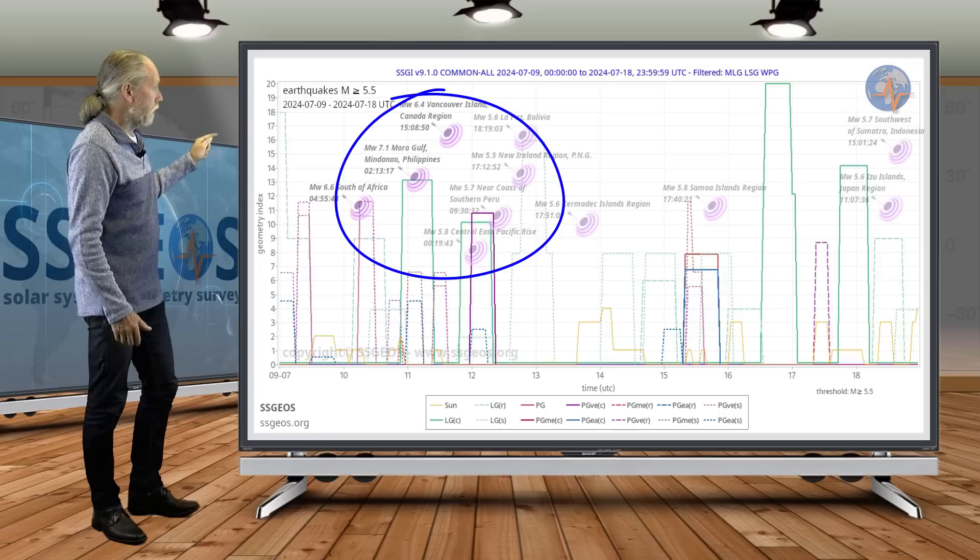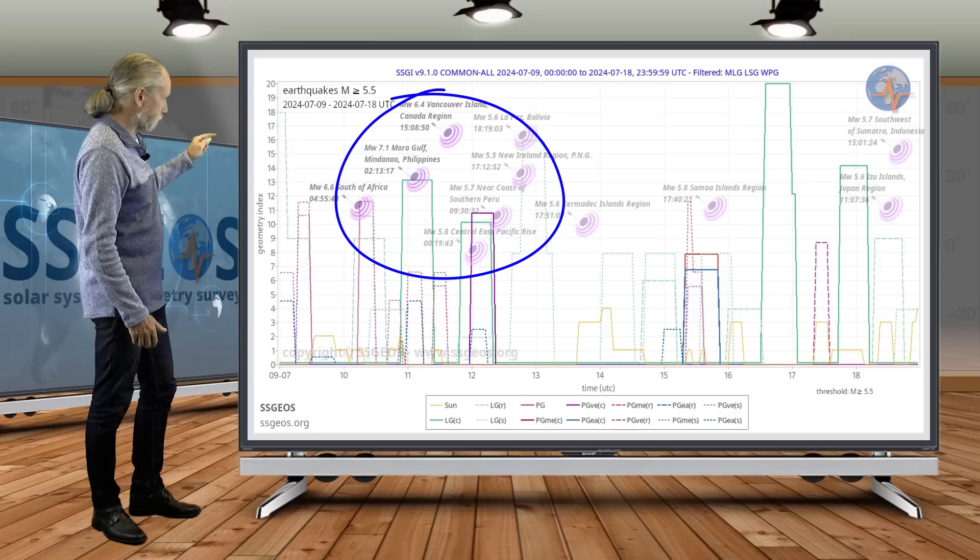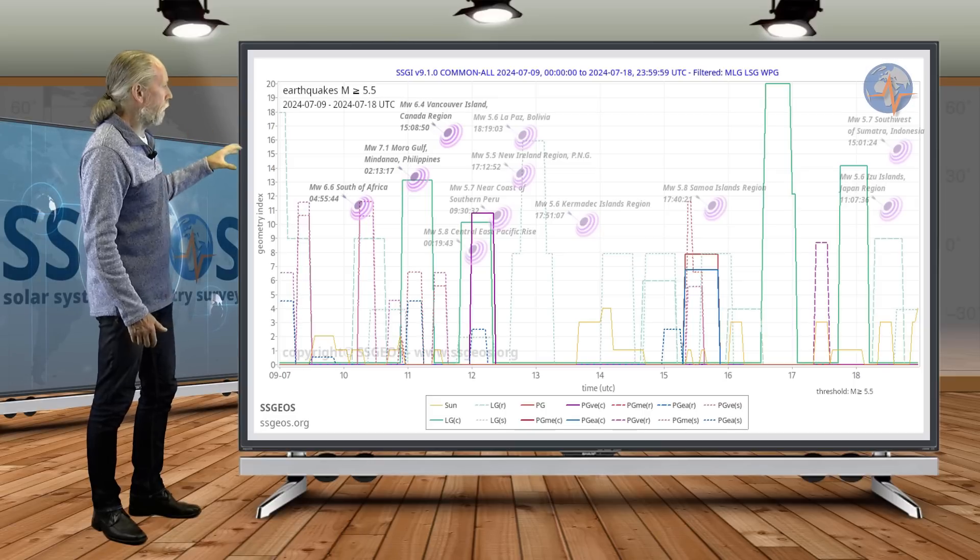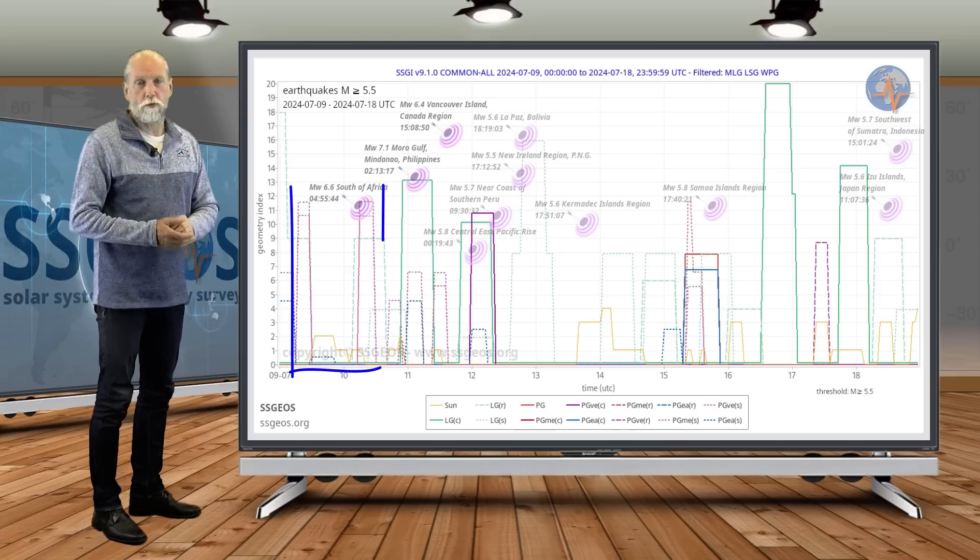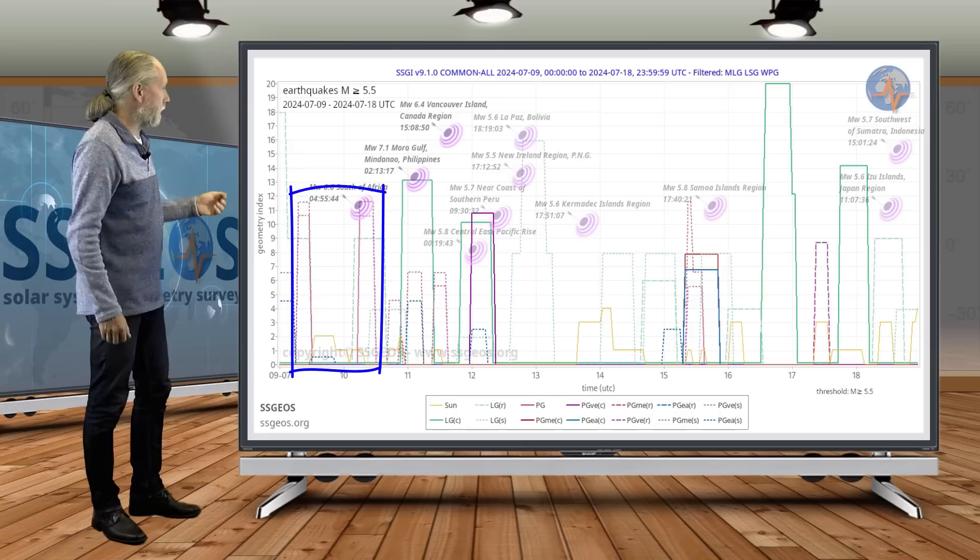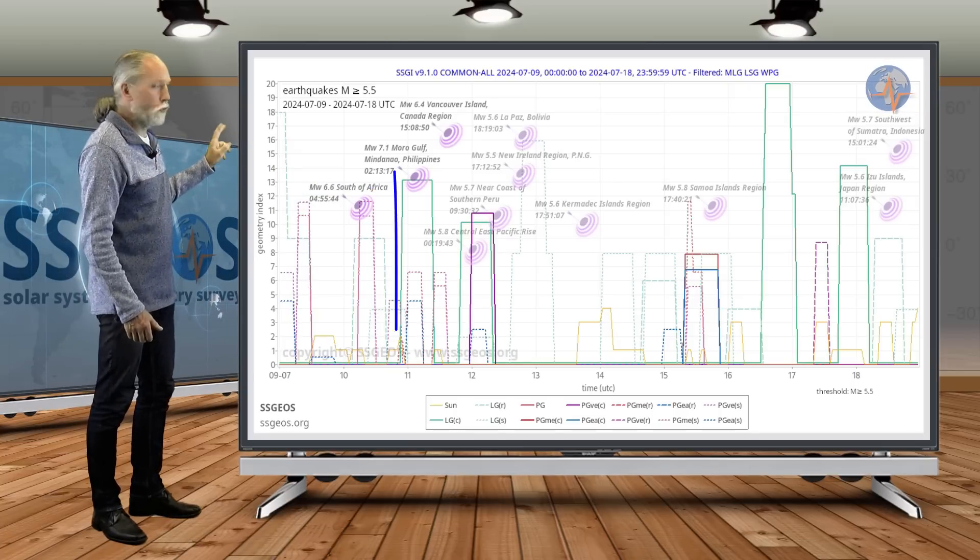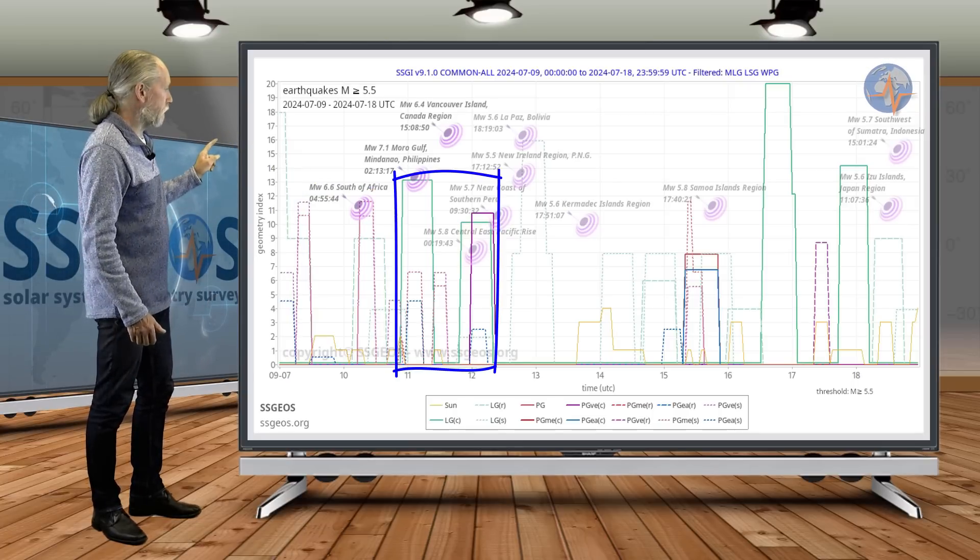7.1 deep below the Moro Gulf in the Philippines, and that all followed on the critical planetary geometry with Mercury, Venus and Uranus, as I explained in the previous update. That happened on the 9th and the 10th, and that was followed by two lunar peaks, lunar conjunctions.